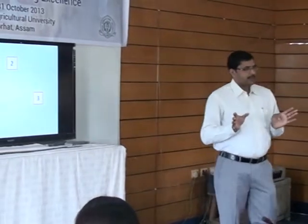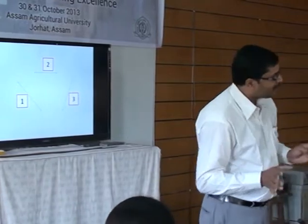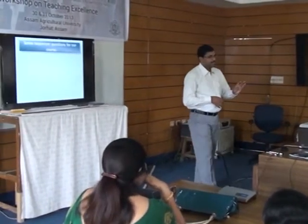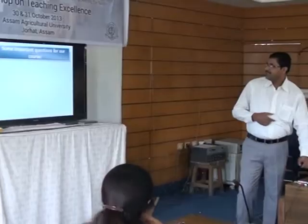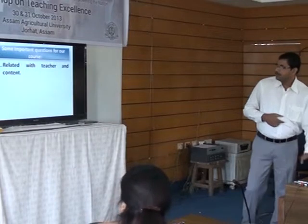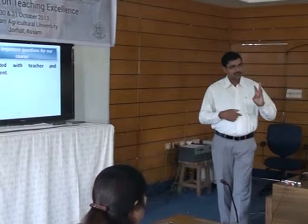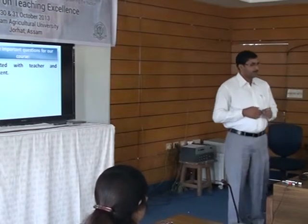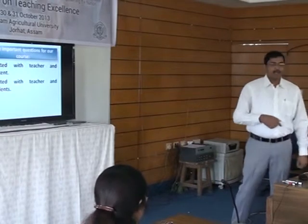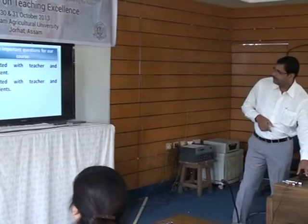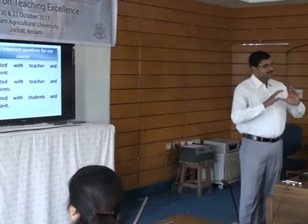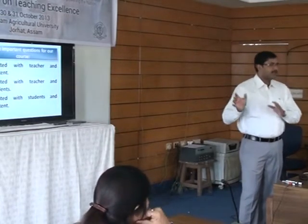In a teaching process, what are the different components? Basically, these three are the main content: teacher, student, and content. In the case of a course, since there are three components — teacher, student, and content — there is a connection between teacher and content, between teacher and student, and between student and content. For any effective training, these three connections must be perfect.